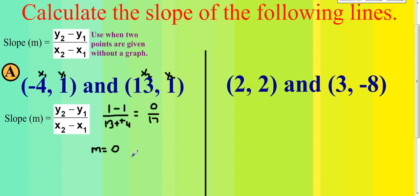So what you have is a horizontal line. This has a slope of 0. Horizontal lines have a slope of 0. Let's go on to the next one.